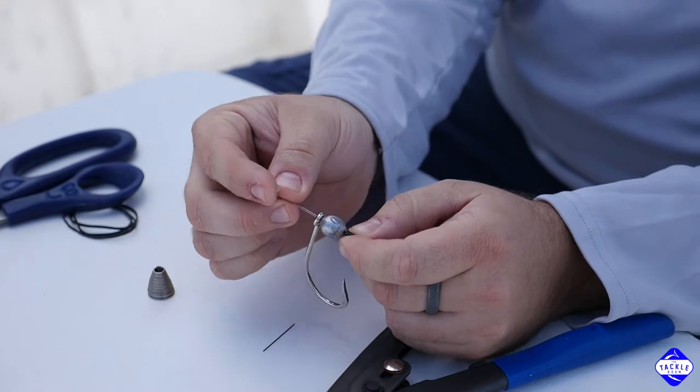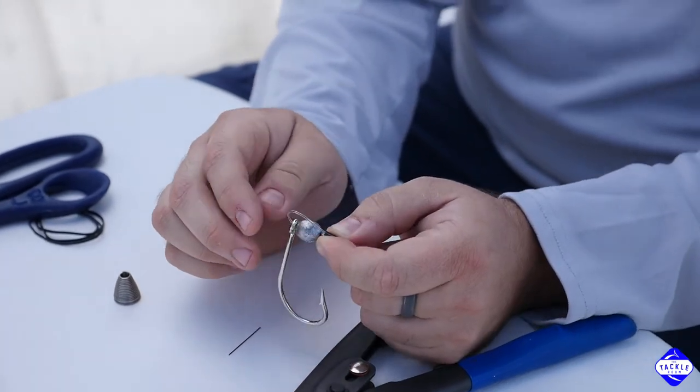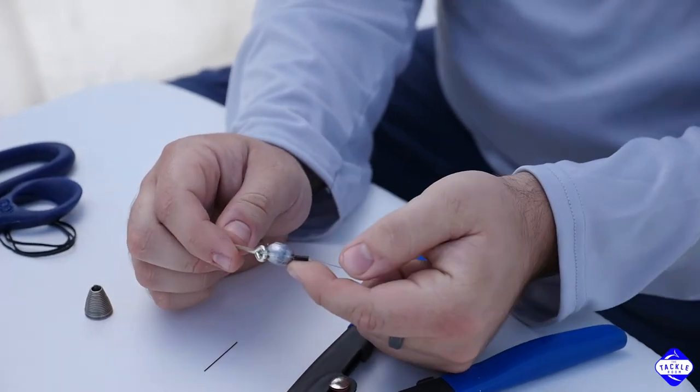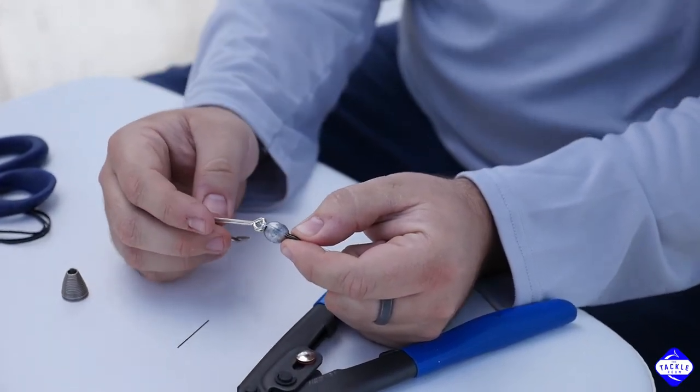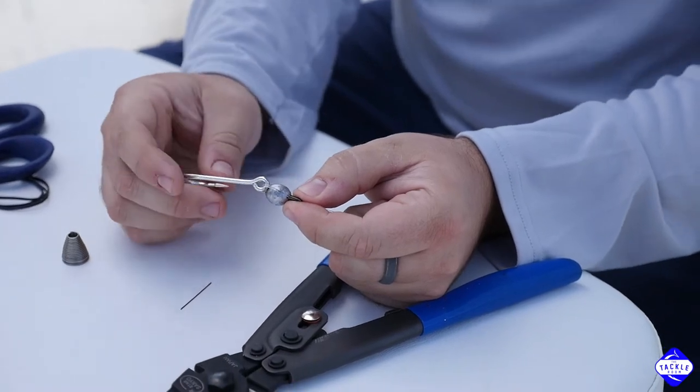And after that, go ahead and bend that mono around and put it back in that sleeve and go ahead and start cinching down on it. Now don't cinch it down real tight, you still want movement in this hook so when you go to rig it in the ballyhoo, you can still move it around.